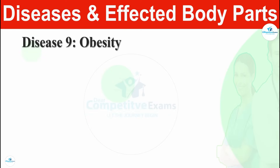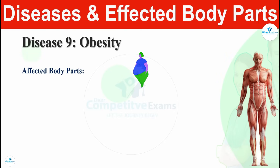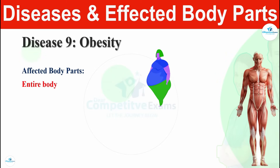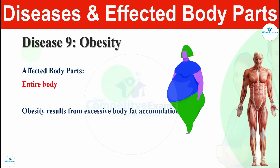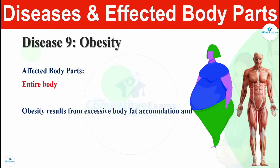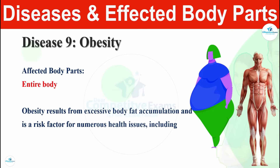Disease number eight is obesity. Obesity affects the entire body. Obesity results from excessive body fat accumulation, and it is a risk factor for numerous health issues including heart disease, diabetes, and joint problems. Excessive body fat leads to heart disease, diabetes, and joint problems, so take care of your food and your body to stay healthy and fit.